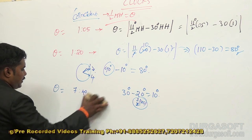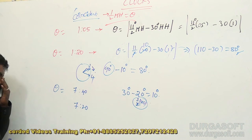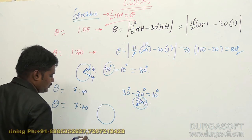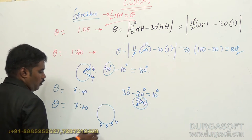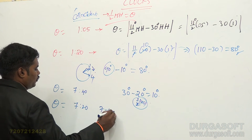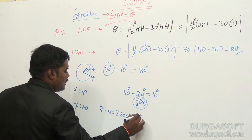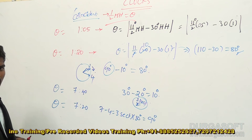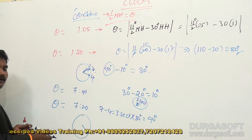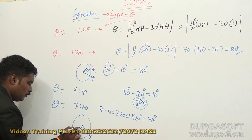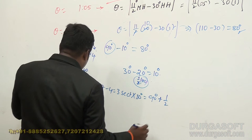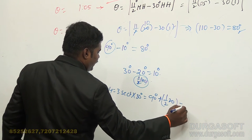Another example: when the time is 7:20, what is the angle? Initially the gap between 7 and 4 — between 7 and 10 — is 7 minus 4 = 3 sectors, 3 into 30 = 90 degrees initial gap. For 20 minutes, the hour hand moves 10 degrees towards the right side. When the minute hand is at 20, the hour hand moves away from 7, so the angle enlarges: 90 plus half of 20 = 90 plus 10 = 100 degrees.